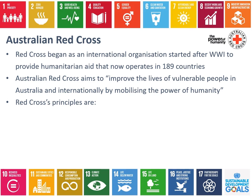The next organisation we're looking at is the Australian Red Cross. The Red Cross began after World War I as an international organisation, with the goal of providing relief for soldiers and people affected by the war around the world. It is now a huge organisation that operates in 189 countries — pretty much every country in the world has a Red Cross presence. The Australian Red Cross is a branch of that, with a mission to improve the lives of vulnerable people in Australia and internationally by mobilising the power of humanity.